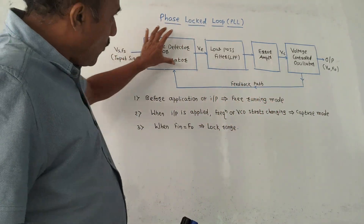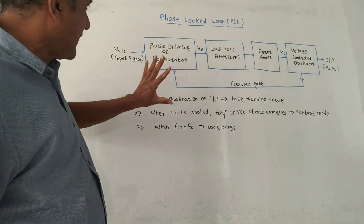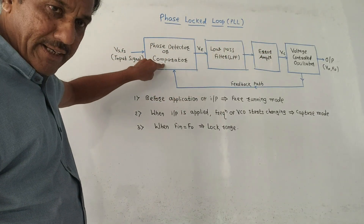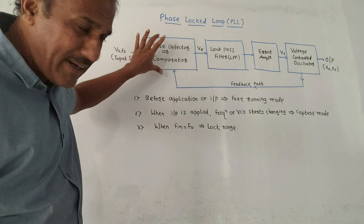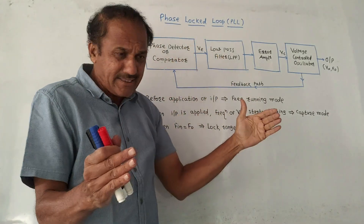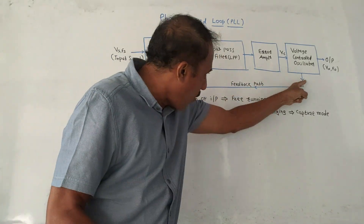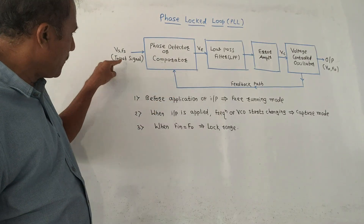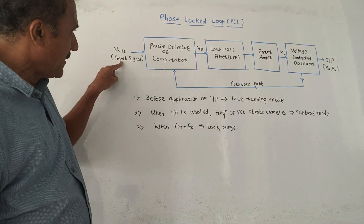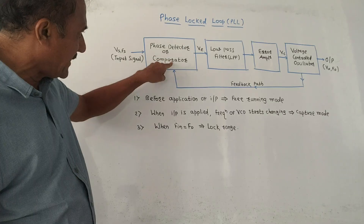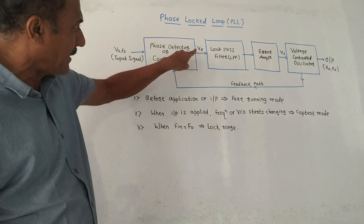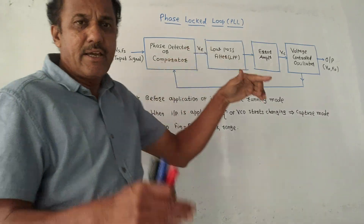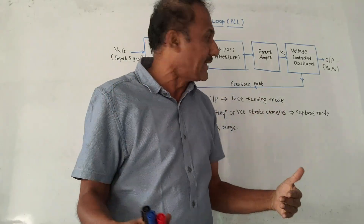Now there are four major blocks as shown in this diagram. First is the phase detector or comparator. As the name indicates, this block compares the output signal — that is output frequency — with the input frequency. The output of this block is generated by VE, also called the error signal.